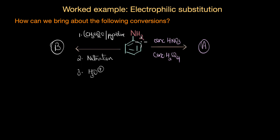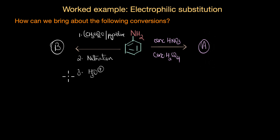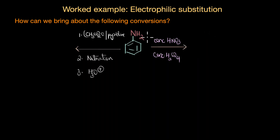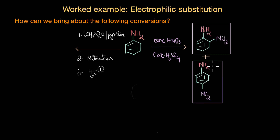For nitration: in the first case we directly nitrate aniline, and in the second case we first perform acetylation to decrease reactivity, then nitration followed by hydrolysis. What products do we get? In the first case, directly nitrating aniline, because NH2 is strongly activating we get ortho as well as para products.